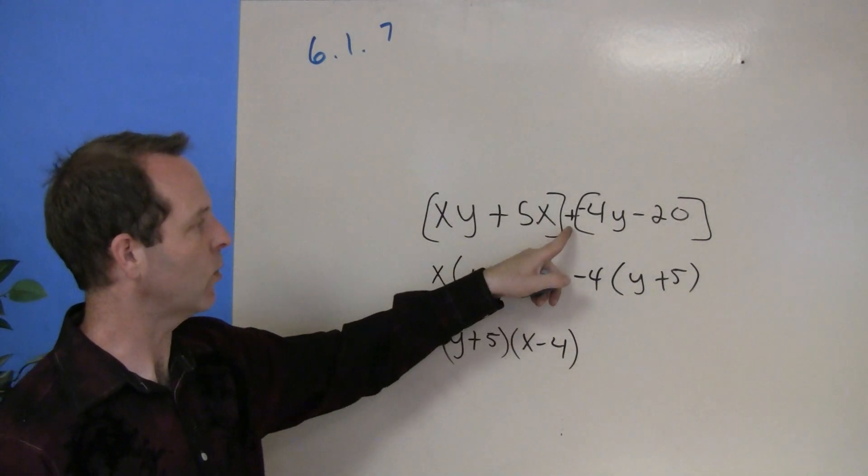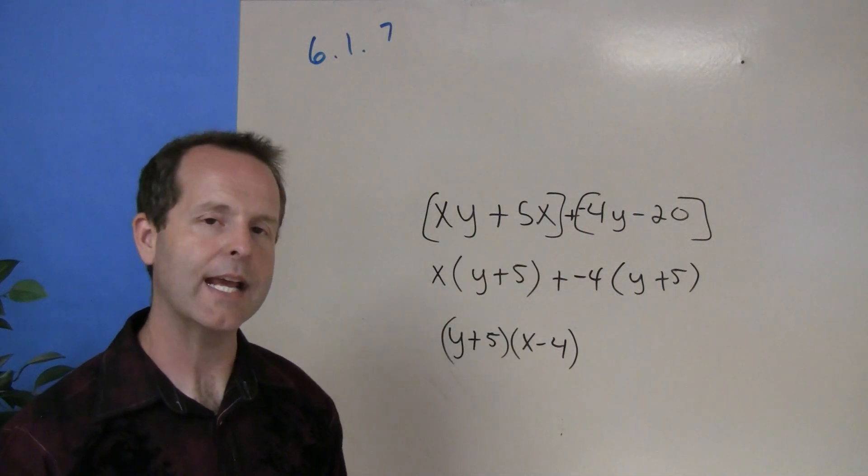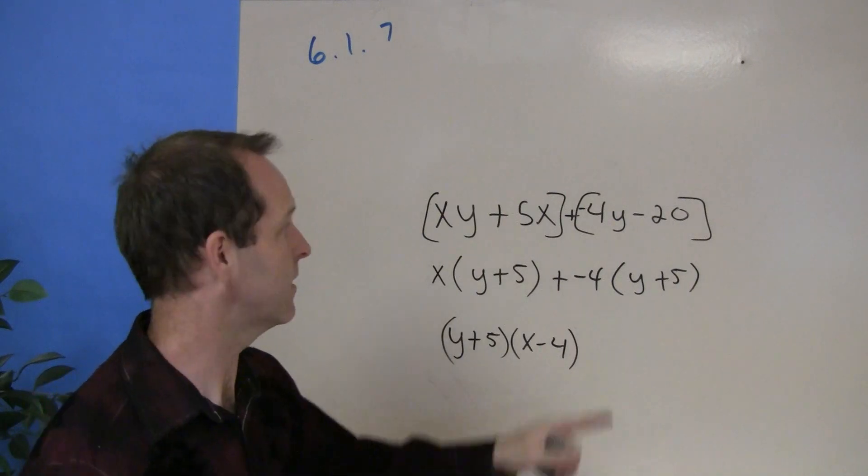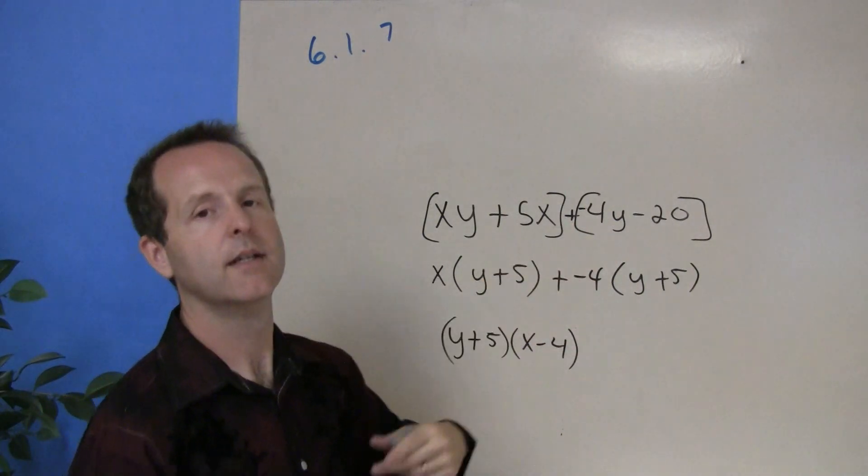So be careful when you see when you're doing grouping and you're going to group the sections around a negative. Change that negative to adding the negative of this next term. So rather than minus 4y it became plus a negative 4y.